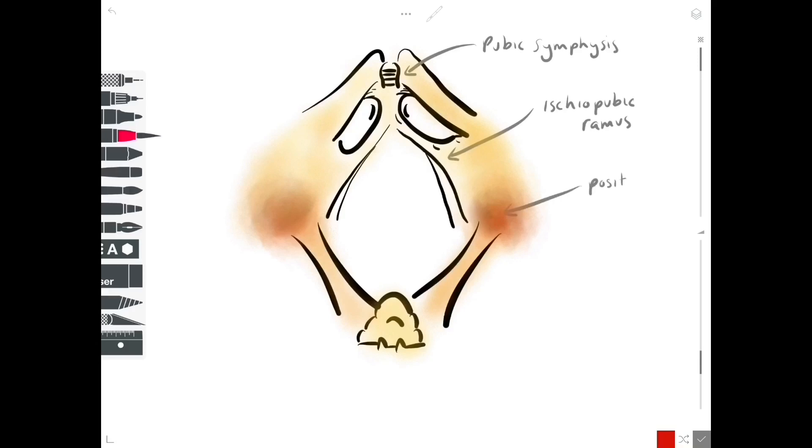That meets with a prominent landmark called the ischial tuberosity, and the ischial tuberosity on either side meets with the tip of the sacrum, the coccyx, via a ligament called the sacrotuberous ligament. This creates a diamond-shaped space of the perineum, and this diamond-shaped space is the shape of the pelvic outlet.